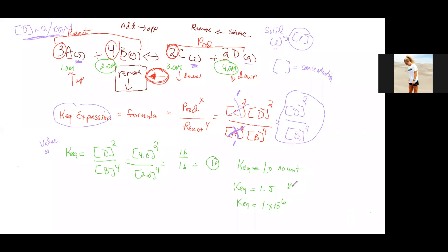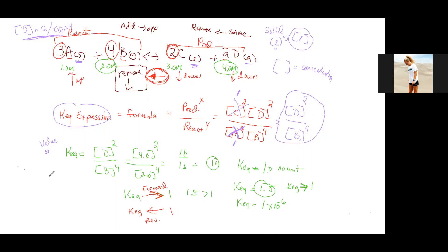If the equilibrium constant is greater than 1 — for example, 1.5 — it's a forward-favoring reaction, shifting from left to right. If the equilibrium constant is less than 1, it's a reverse-favoring reaction, shifting from right to left. Forward-favoring reactions look like the fishtail graph; reverse-favoring reactions look like the opposite shape.